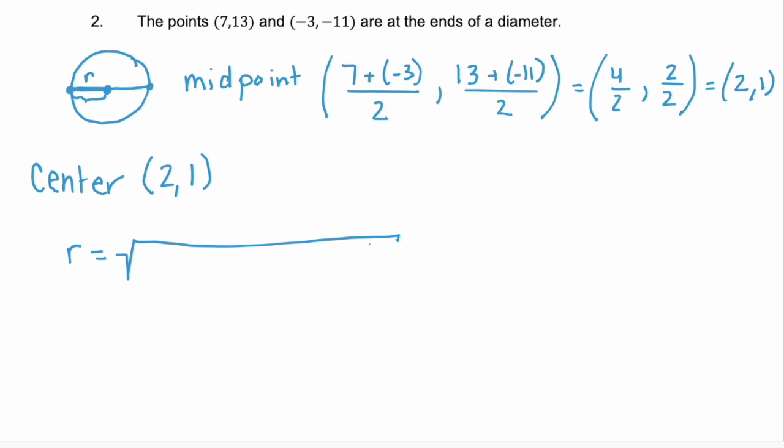And the distance formula is the square root of the difference between two points. So we'll use this point x,y, and we'll use our center. So the difference between that is 7 minus 2, the difference between the x values, squared, plus the difference between the y values, 13 minus 1, squared. 7 minus 2 is 5. So we have 5 squared, plus 13 minus 1, 12 squared.